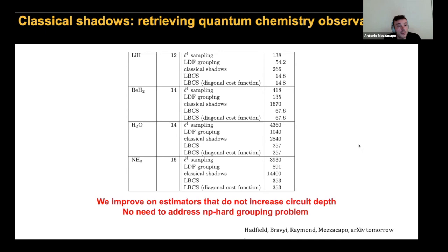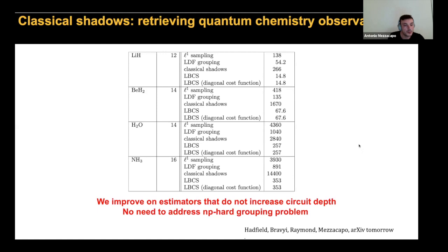We have a paper coming out on arXiv tomorrow, so if you are interested in more details, you can check it out. We have also generalized the optimization from a single reference state to a multi-reference case — in quantum chemistry, one can easily compute perturbative approximations to the ground state, so the cost function is different but can still be optimized. The conclusion is that our optimizer improves on previously known estimators that do not increase circuit depth, and it avoids the typical NP-hard grouping problem — so it's an efficient result.